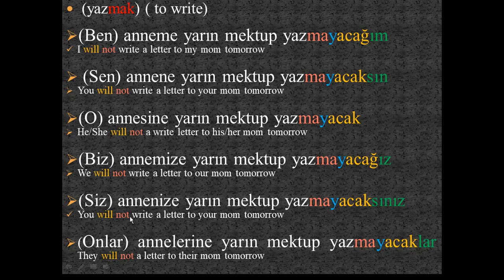For third person plural: 'Onlar annelerine yarın mektup yazmayacaklar.' Remember, for third person plural the personal suffix is optional — we can omit it and treat it like third person singular, just saying 'onlar annelerine yarın mektup yazmayacak.'